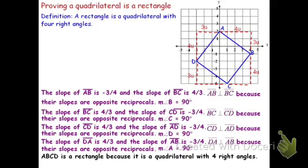To summarize what we did: if we want to prove that we have a rectangle, we'll start by finding the slopes of all four segments. We'll look at the segments that intersect and show that they have opposite reciprocal slopes. If they have opposite reciprocal slopes, those are perpendicular segments. If the segments are perpendicular, then the angle formed between them is 90 degrees. If you can show that you have four angles whose measure is 90 degrees, you have a rectangle — because that's the definition: a rectangle is a quadrilateral with four right angles. Thank you for watching this video, and I hope it helps you understand this.